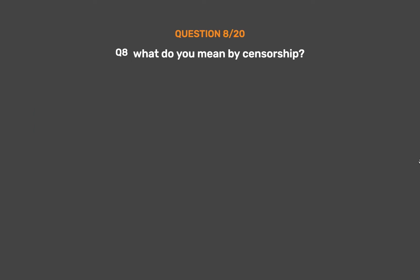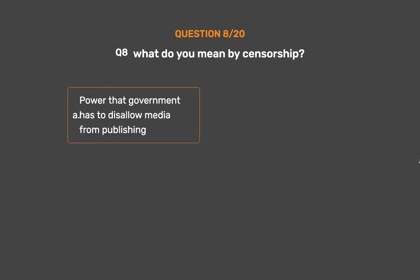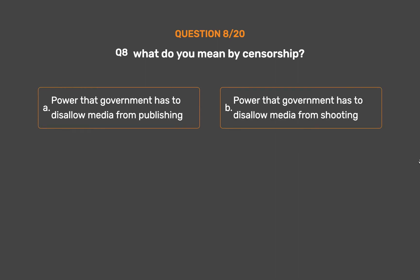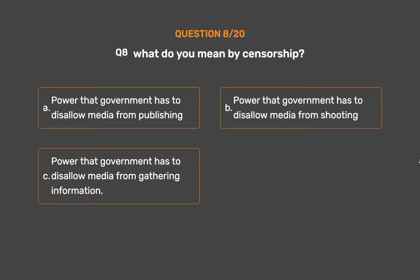Question number 8. What do you mean by censorship? Option A: Power that government has to disallow media from publishing. Option B: Power that government has to disallow media from shooting. Option C: Power that government has to disallow media from gathering information. Option D: None of these.